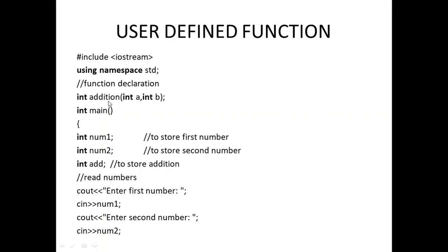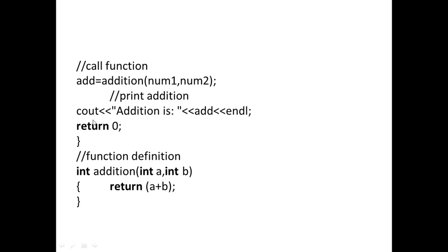The function name can be anything we choose — here we can write it as 'add' or 'addition'. In the main function, we have two numbers to add. The result is stored in 'add', and the function is called as: result = addition(num1, num2). The control automatically flows to the function definition.